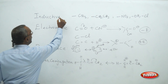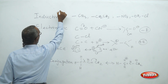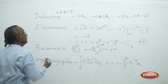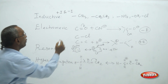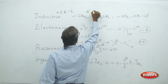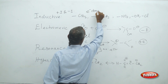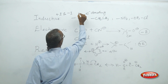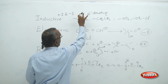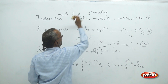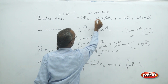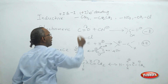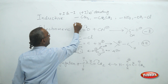The inductive effect is denoted as plus-I and minus-I. Electron donating groups are called plus-I groups. For example, alkyl groups donate electrons — methyl group, ethyl group. These are examples of plus-I effect groups, such as alkyl groups in general.